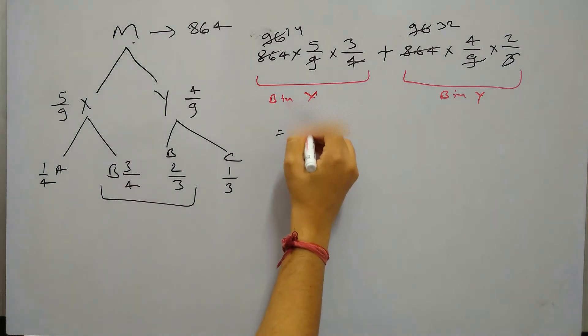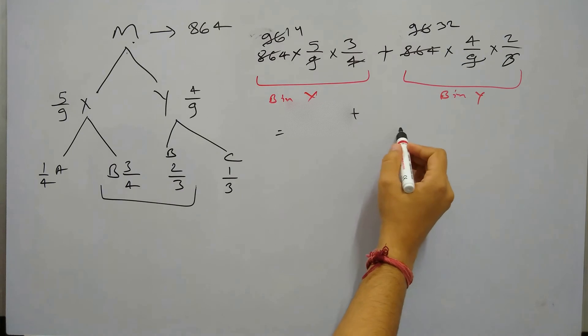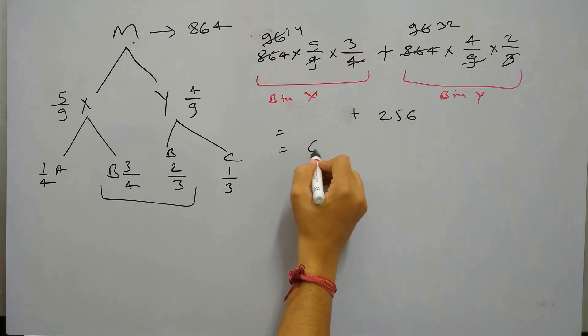So this is B in X and this is B in Y. So we have 210 plus B in Y is 256 which is equal to 616.